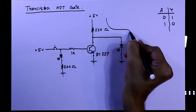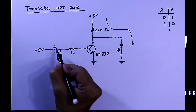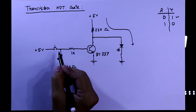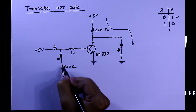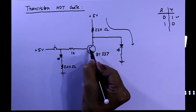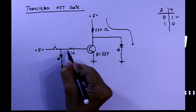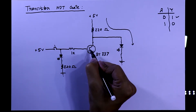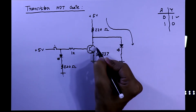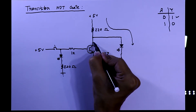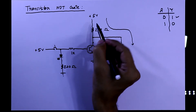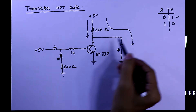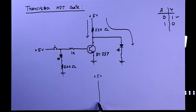Current is flowing through this way, so when the switch is off we are getting a high output. Now when the switch is on, the input LED will glow and the transistor is now turned on because current is flowing through the 1 kilo ohm resistor, sending a high signal to the base of the transistor. At this point the transistor is closed, so the collector is directly connected to ground.